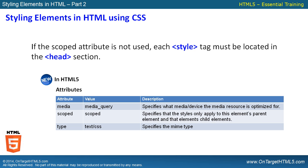Then we also have the scoped attribute. It specifies that the styles only apply to this element's parent element and that element's child elements. If we use the scoped attribute — and this is very new to HTML5 — we can actually use the style tag inside the body section of our HTML document. We're going to demonstrate how you can actually scope a particular set of styles for a parent element and its child elements inside of your HTML document.